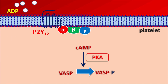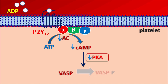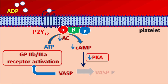When ADP binds to P2Y12 receptors, they are activated and inhibit the enzyme adenylyl cyclase. When this enzyme is inhibited, conversion of ATP into cyclic AMP is reduced. With reduced cyclic AMP, protein kinase A levels decrease, and consequently the conversion of VASP into its phosphorylated form is reduced. In this way, ADP increases unphosphorylated VASP levels, which further activates GP2B/3A receptors, leading to platelet aggregation.